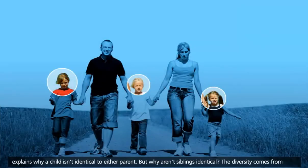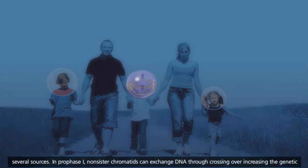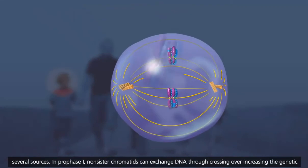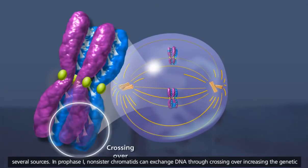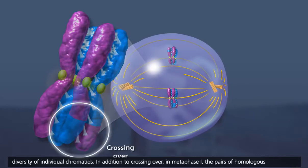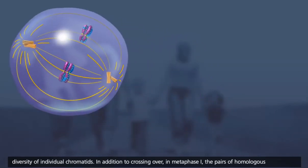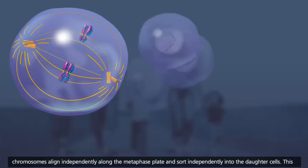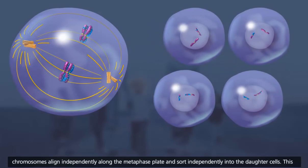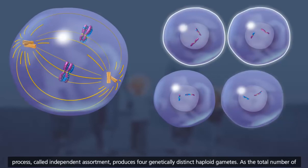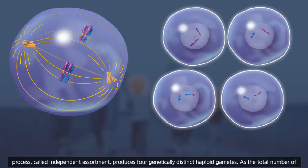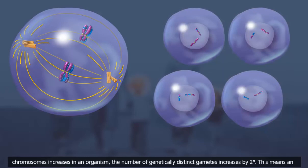But why aren't siblings identical? The diversity comes from several sources. In prophase I, non-sister chromatids can exchange DNA through crossing over, increasing the genetic diversity of individual chromatids. In addition to crossing over, in metaphase I, the pairs of homologous chromosomes align independently along the metaphase plate and sort independently into the daughter cells. This process, called independent assortment, produces four genetically distinct haploid gametes.